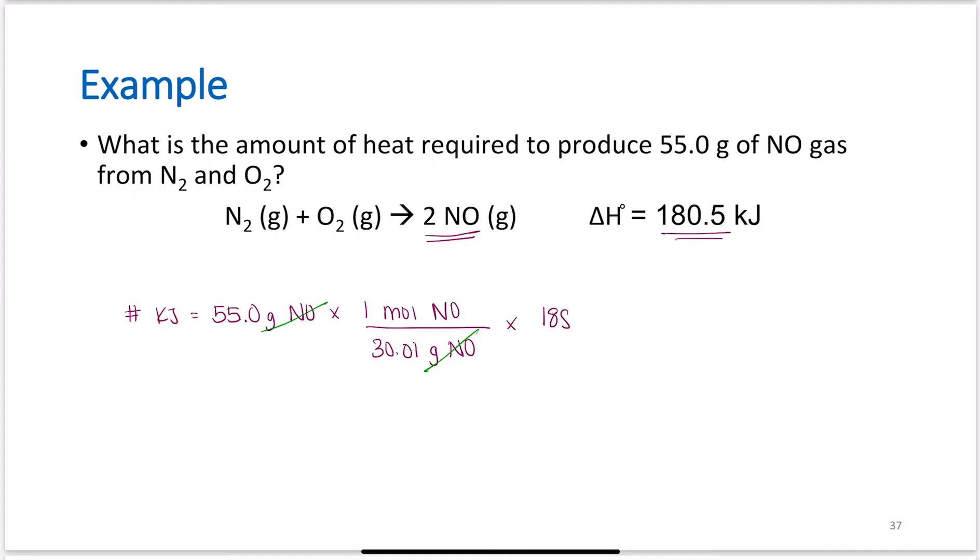So, times 180.5 kilojoules per two moles of NO. That cancels my moles of NO. Do not forget that two there. This is a stoichiometric relationship. 165 kilojoules. Again, 180.5 is for two moles of NO. What this means is to produce 55 grams of NO gas from N2 and O2, I would have to provide 165 kilojoules of heat.